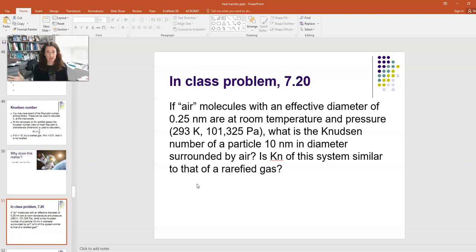So, what's the Knudsen number of a particle that's 10 nanometers in diameter surrounded by air under these conditions? Because we definitely wouldn't think of room temperature and pressure as being a rarefied gas. But for a nanoparticle, maybe it does look like outer space. So, what's the Knudsen number of this system? And is it similar, or could we classify it as a rarefied gas?